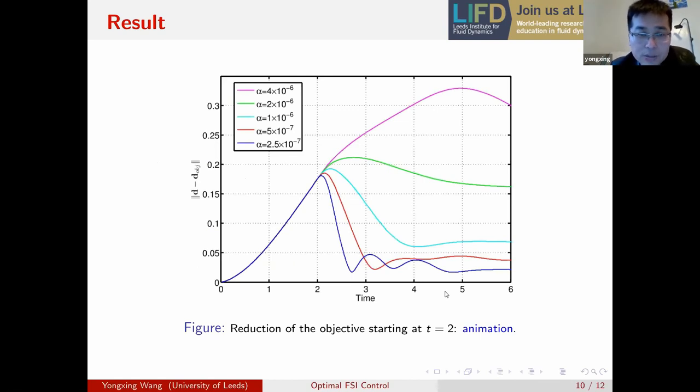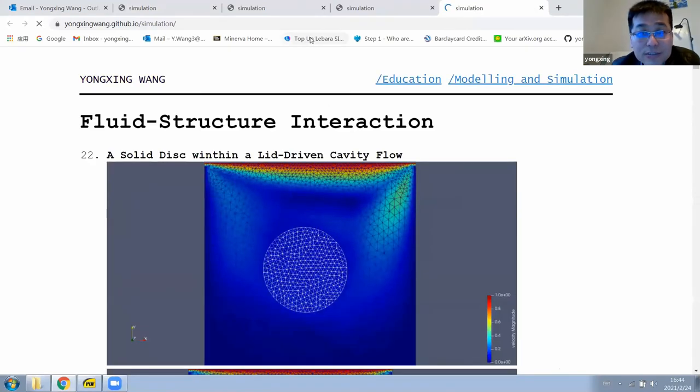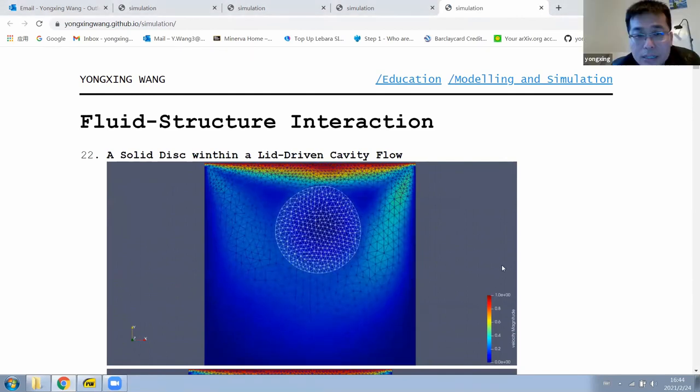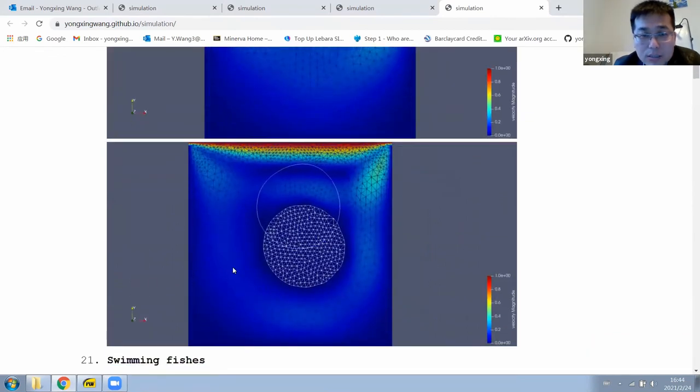So this slide shows the results of the reduction of the objective function for different regularization parameters. You might see the smaller the parameter is, the more we can reduce the objective function, but we have some slight oscillation there. So I'm going to show the animation again, let's see whether you can see it. Yes, I can see. Good, good. So this is first. All right. So in the second animation. I think we have to wait for a while to let it run again.